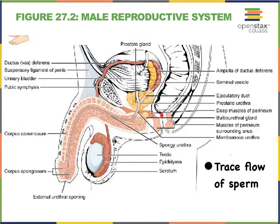One last thing I want to point out: here we have the anal canal from the rectum. Notice the location of the rectum versus the prostate gland. This is the reason why the prostate gland in a male can be palpated by means of inserting a finger into the anal canal — the prostate sits right nearby the rectum.